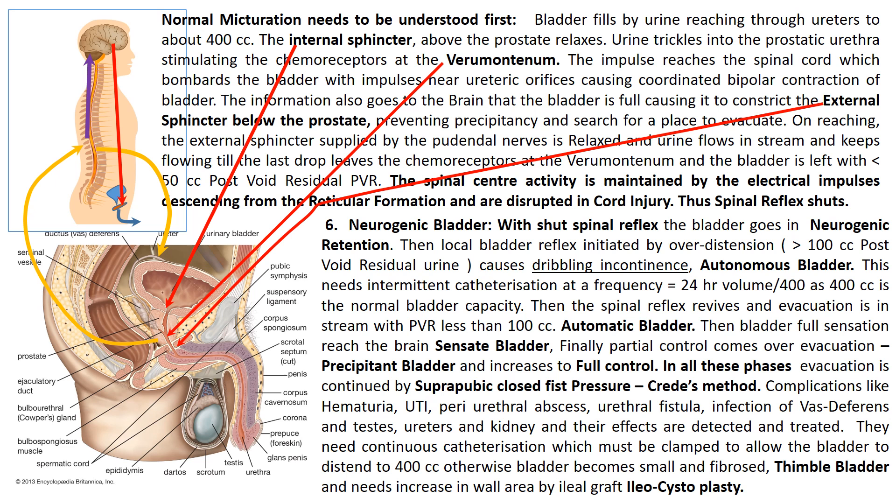When the spinal reflex revives and evacuation is in a stream with PVR less than 100 cc, this is called an automatic bladder. When the bladder-full sensation reaches the brain, this is called a sensate bladder. Then partial control comes over evacuation — this is called the precipitant bladder — and finally there is full control and a normal bladder.